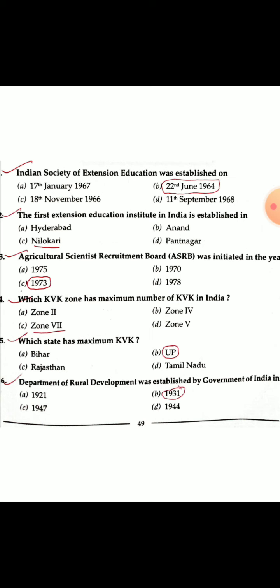Sixth question: The Department of Rural Development was established by the Government of India in 1931.